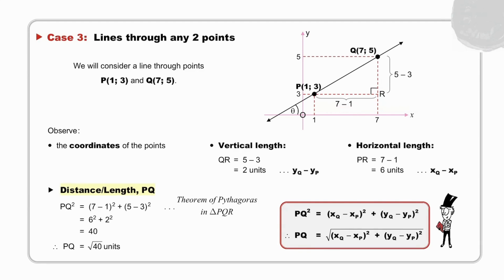Now, calculate the distance or length PQ. Pause to do your calculation, and then to check it. By applying the theorem of Pythagoras in triangle PQR, the square of PQ is equal to the sum of the squares on the other two sides, (7 - 1)² + (5 - 3)². And we arrive at a value of 40 for PQ squared. But PQ itself is the square root of 40.